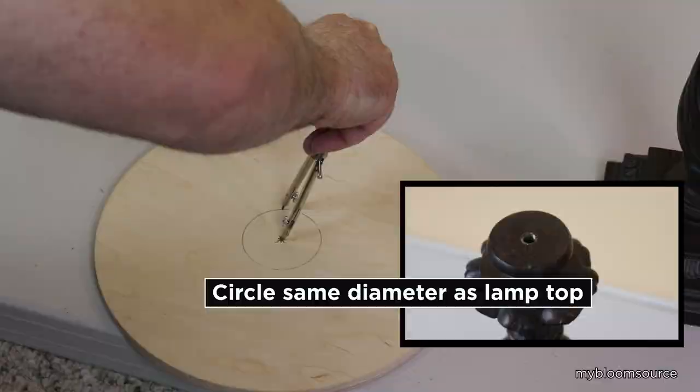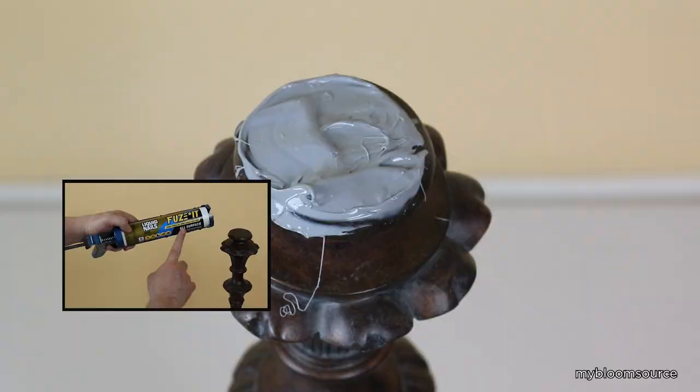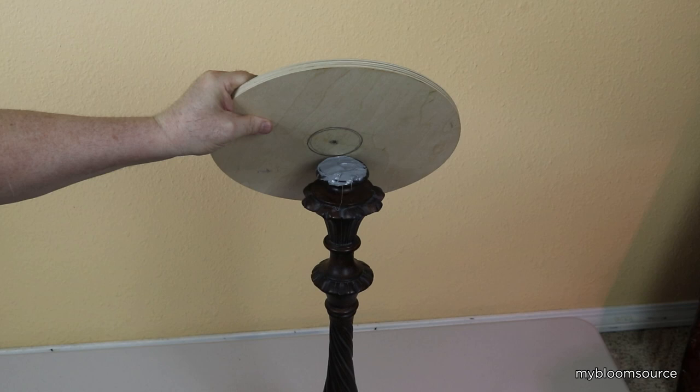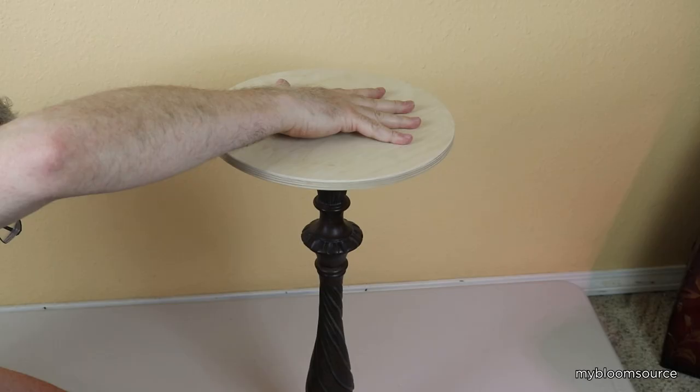We are now ready to apply the wooden top to the lamp assembly. For this application we decided to use Liquid Nails Fusit, an all-purpose construction adhesive. We cover the top of the lamp with the adhesive and then using the guidelines created earlier, we carefully position and apply the wooden top.